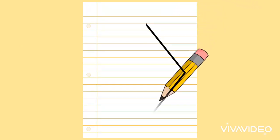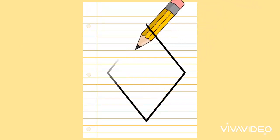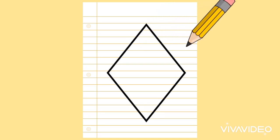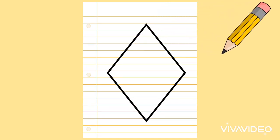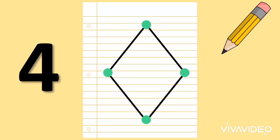What shape am I drawing? A diamond. And how many corners does a diamond have? Let's count. One, two, three, four. Four corners.